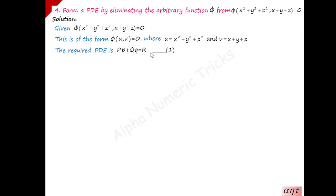One method is to write the function as u equals f of v or v equals some other function of u, differentiate partially with respect to x and y, and eliminate the arbitrary function. Another method is using the Lagrangian equation. You use Lagrange's equation Pp plus Qq equals R, where capital P, Q, R are functions of x, y, and z. Number that as equation 1. You have to find the values of capital P, Q, and R using this and substitute to get the required partial differential equation.